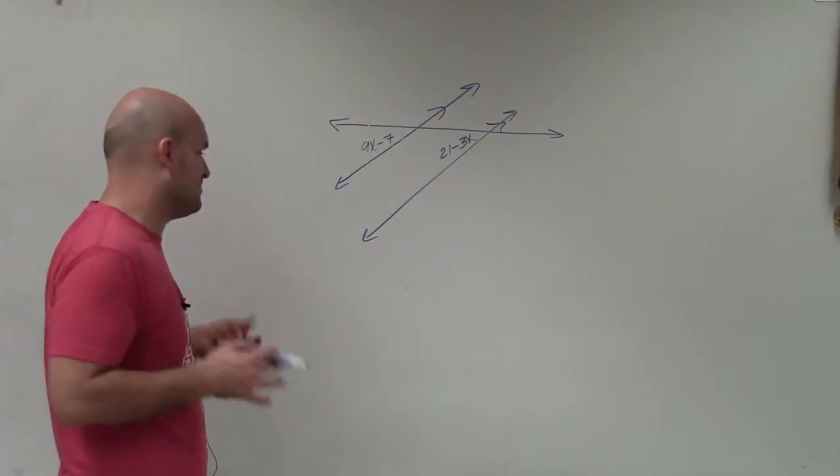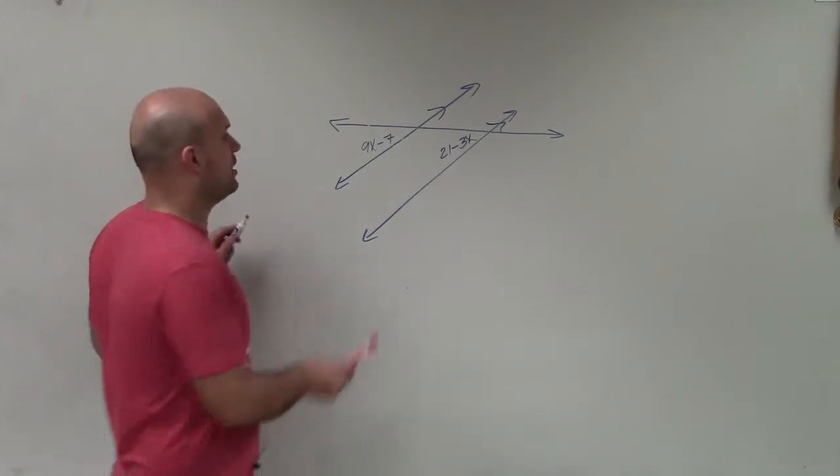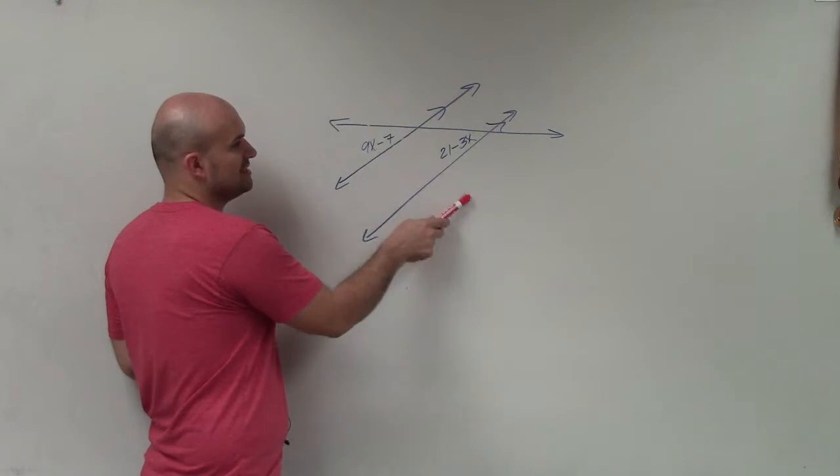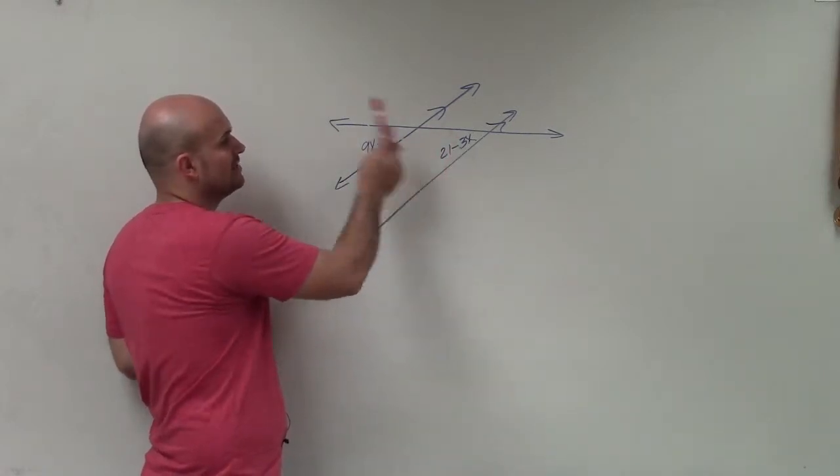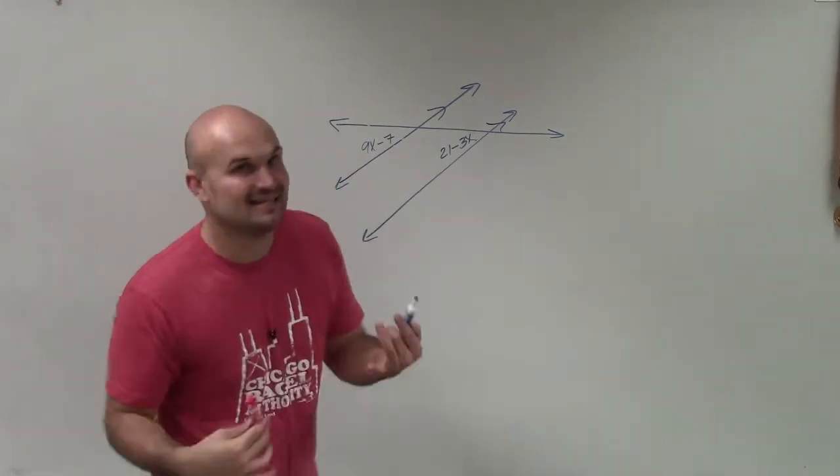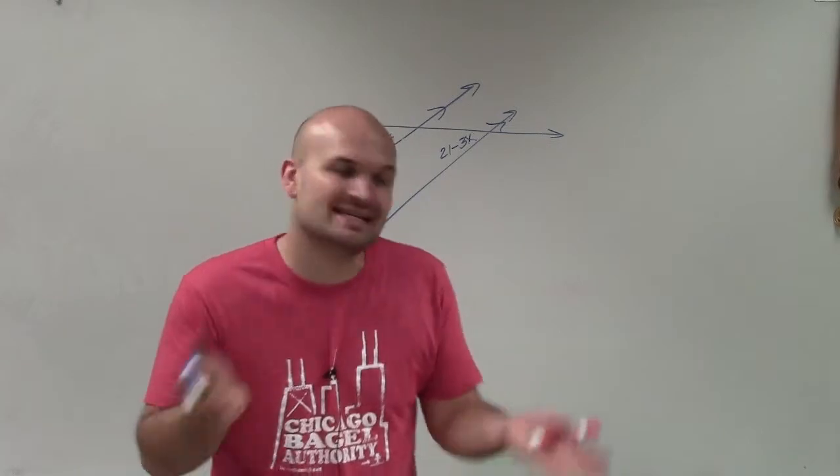Now we need to determine what type of angle relationships these are. I look at here and say, both of these are not exterior. Both of them are not interior. So the only other one is one interior, one exterior, which is not in any of the names of the angles, but is what corresponding angles are.